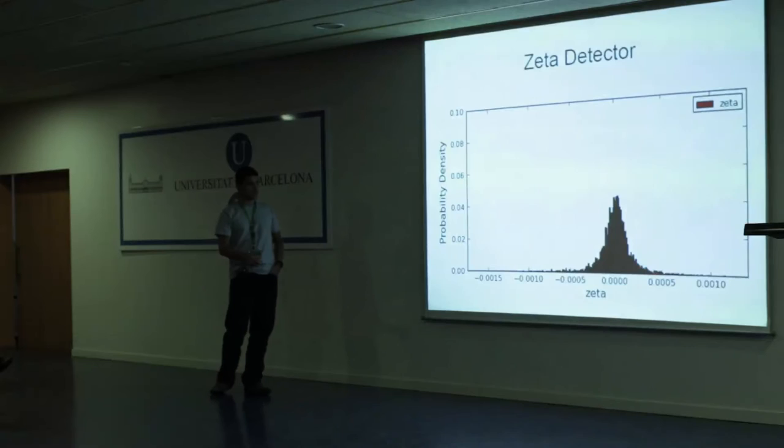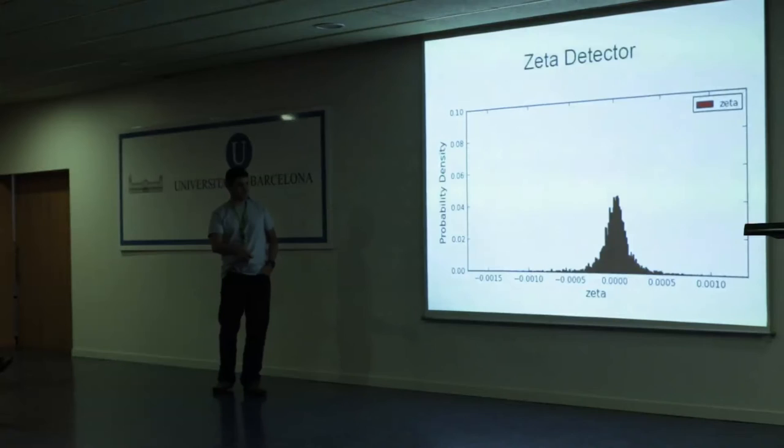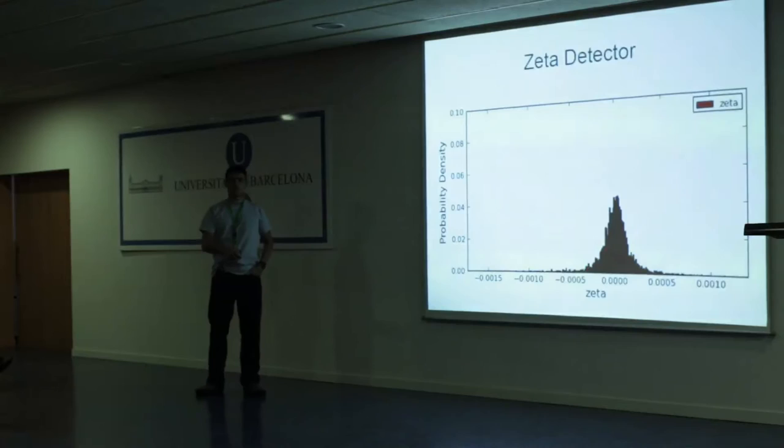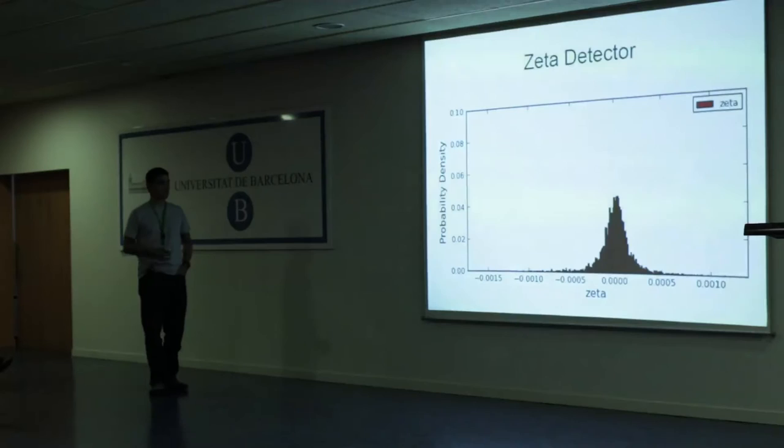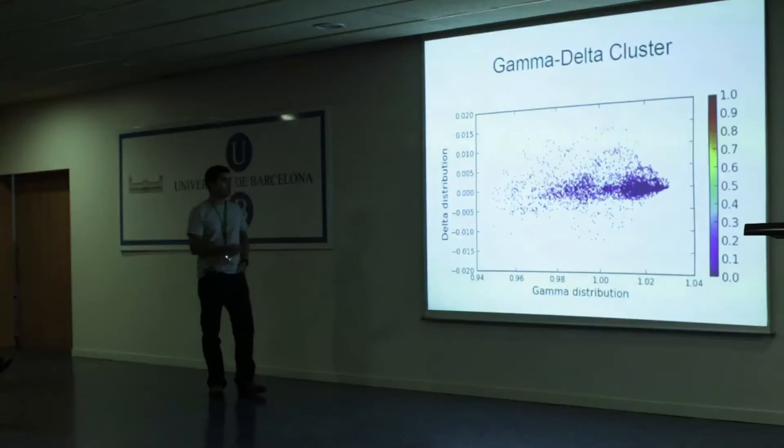With the zeta detector, you notice the zetas are much, much smaller - from 0.0005 to minus 0.0005. This interval is even smaller, meaning the zeta detector will probably be the one raising all the alerts in case of corruption.